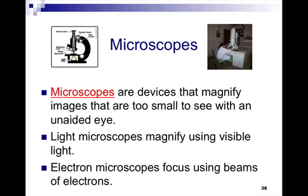Electron microscopes focus using beams of electrons, so pretty easy: light microscope uses light and the electron microscope focuses on using beams of electrons.